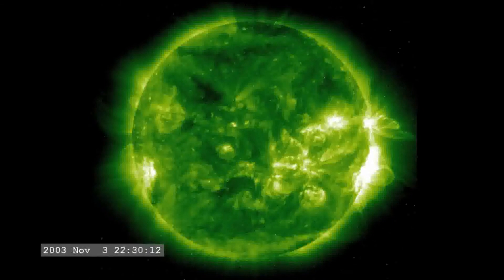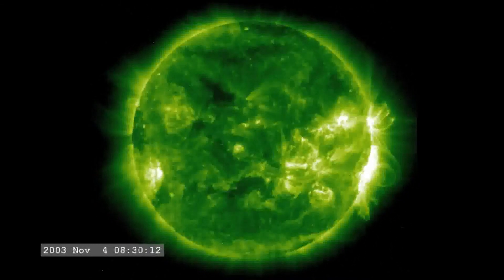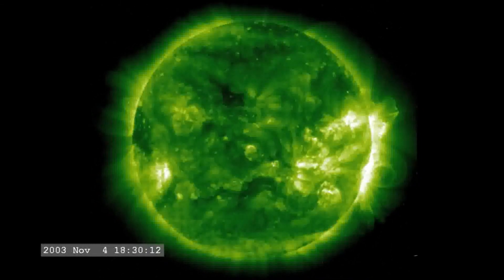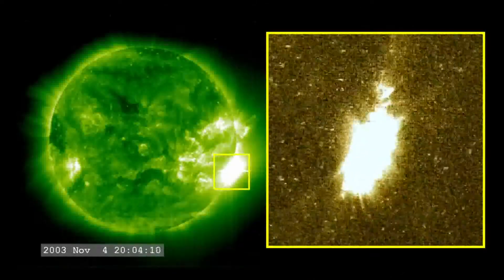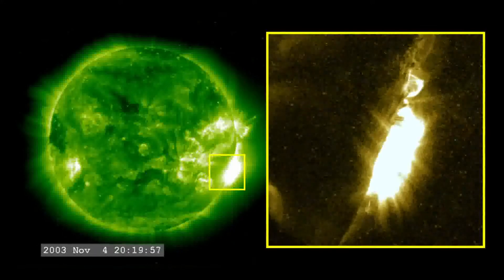The most powerful flare on record was in 2003, during the last solar maximum. It was so powerful that it overloaded the sensors measuring it. They cut out at X-17 and the flare was later estimated to be about X-45.